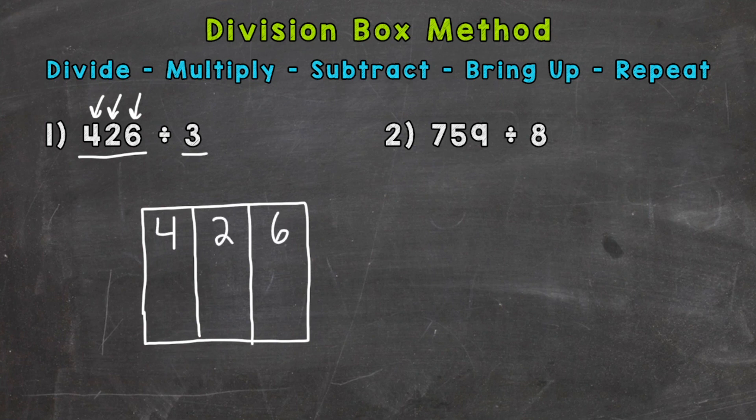Now the more you do of these, your spacing will get better. You'll improve with the spacing and how you line things up. So the three, our divisor, goes on the outside. So now we're set up 426 divided by three using the box method.